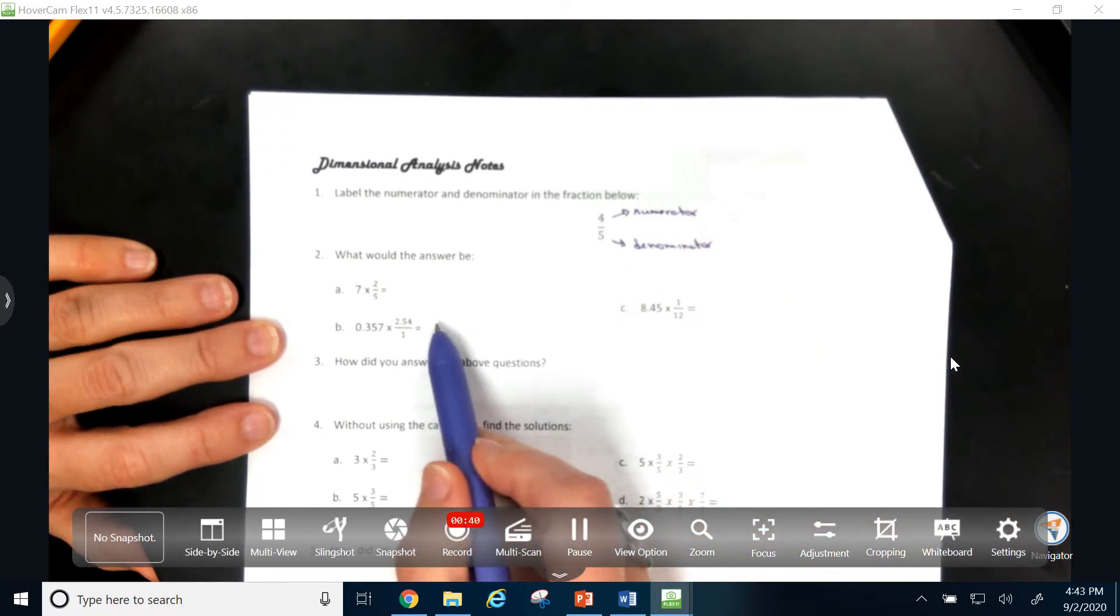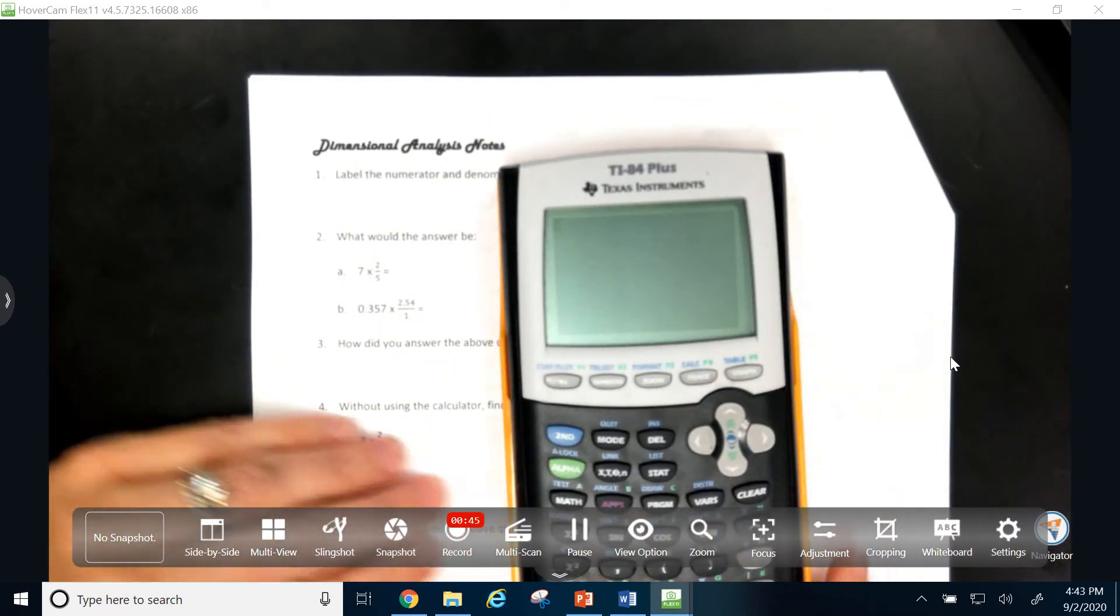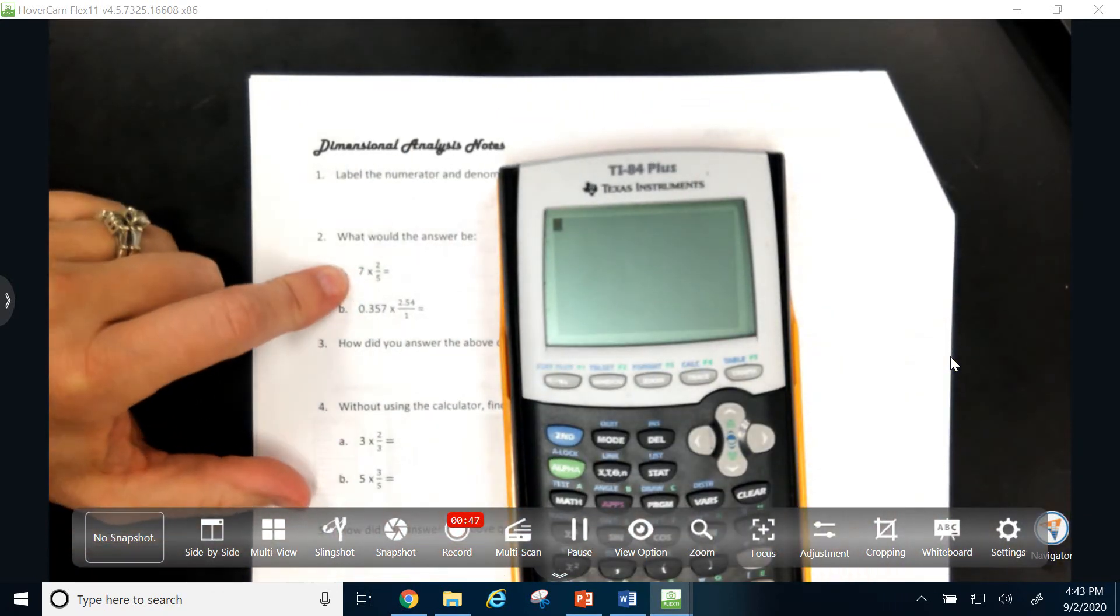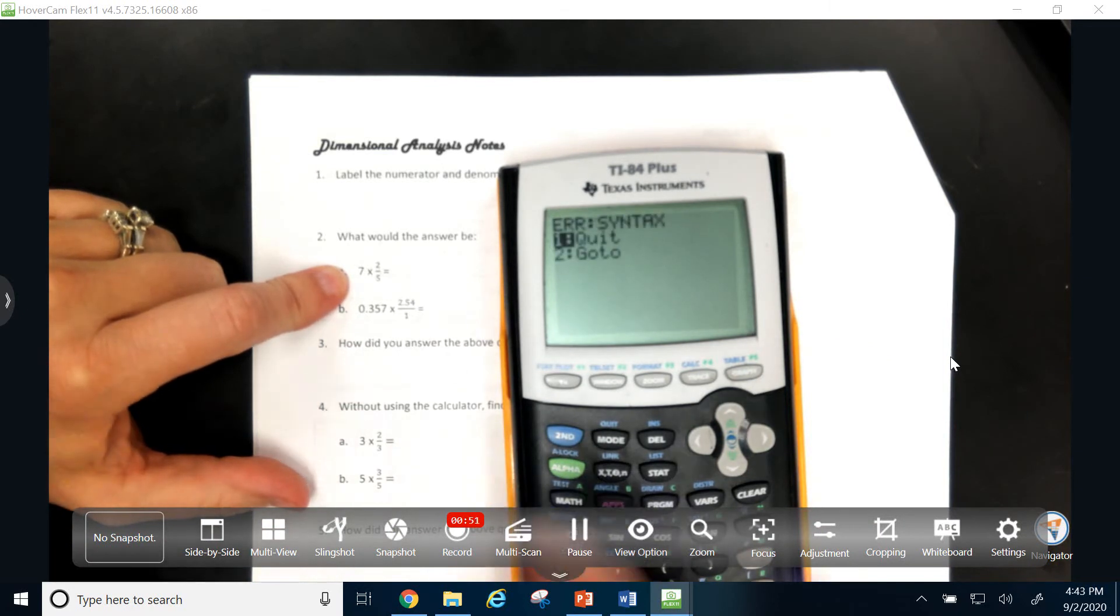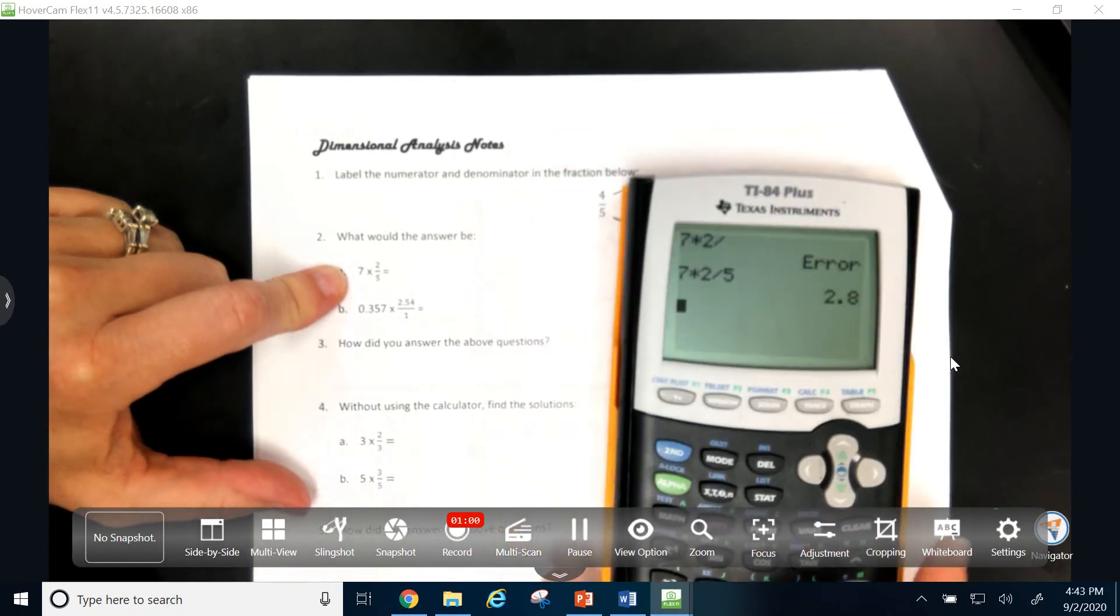Then, looking at number two, what would the answer be? When we type things into the calculator, we know that 7 times 2 fifths would go in as 7 times 2 divided by 5.